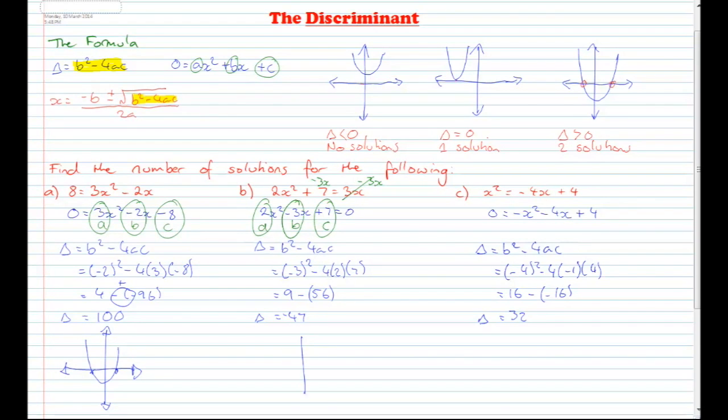Now because our discriminant is a negative value, we look up here at our little key, and when our discriminant is negative, that is less than 0, we have no solution. So our graph will look something like that, where it doesn't go through the x-axis at all.